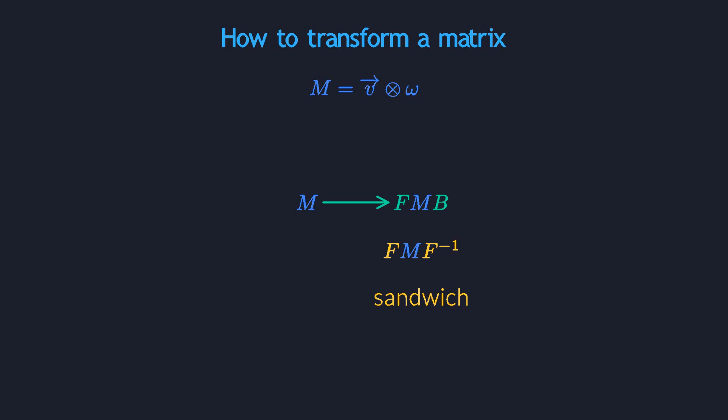In that video I called this expression the there and back again pattern. The two sandwich crusts are each other's inverses because you first have to move to the new basis, do your thing there, and then come back. But now this pattern gets an additional layer of meaning. The crusts are each other's inverses because the matrix contains two parts that transform in opposite directions. The pattern makes the mixed variance of the matrix very explicit. I just love how this sheds new light on something we thought we already fully understood.